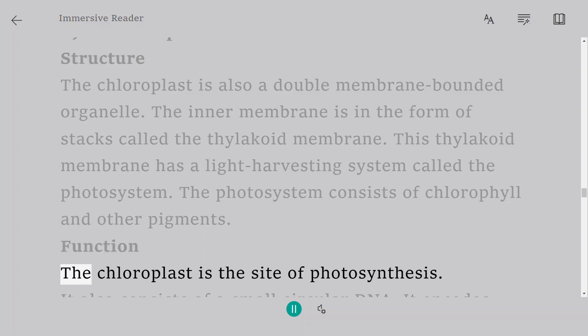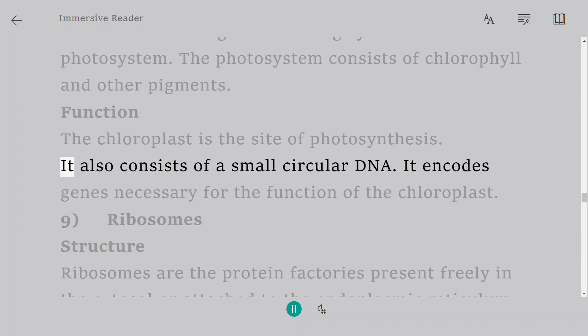Function: The chloroplast is the site of photosynthesis. It also consists of a small circular DNA. It encodes genes necessary for the function of the chloroplast.